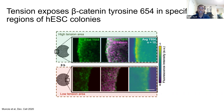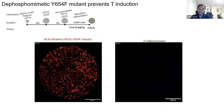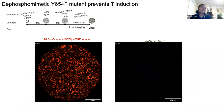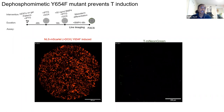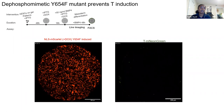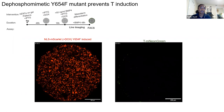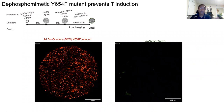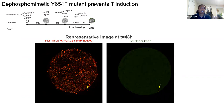As an acid test, I created a dephosphomimetic mutant where tyrosine 654 is mutated to a phenylalanine that cannot be phosphorylated. The construct is expressed during differentiation, confirmed by a nuclear marker. When this mutant is present, brachyury (T) induction and mesoderm specification are completely ablated—barely any expression is visible at 48 hours. This demonstrates that Y654 phosphorylation is necessary for mesoderm differentiation and is induced by force.